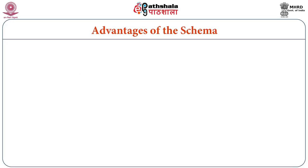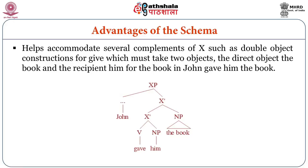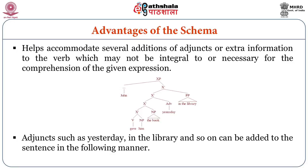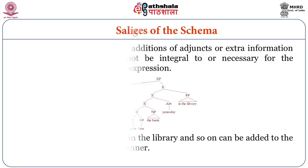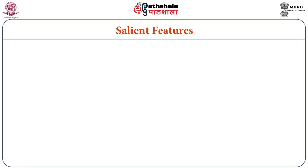What are the advantages of the schema? It helps accommodate several complements of X, such as double object constructions — for the verb 'give,' which must take two objects: the direct object 'the book' and the recipient 'him,' as in 'John gave him the book.' See the tree diagram to understand this better. It also helps accommodate several additions of adjuncts — extra information to the verb which may not be integral to or necessary for the comprehension of the given expression.